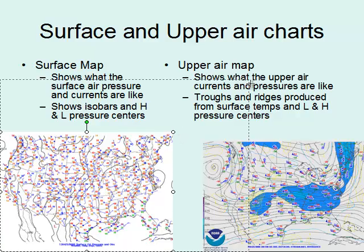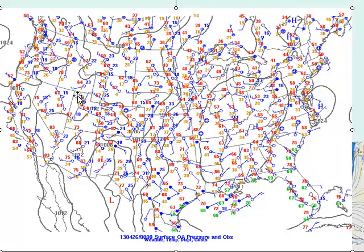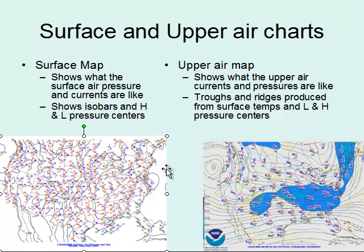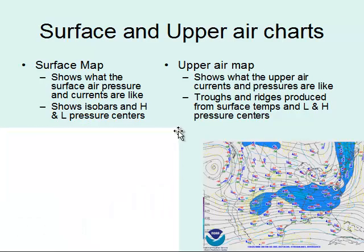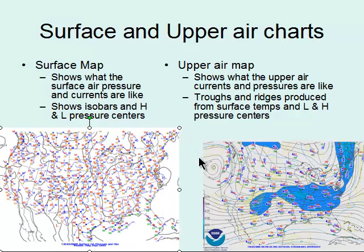If we enlarge this diagram, you can see lots of information. The black lines are pressure lines, and here you can see a closed black line with an H in the center. Each of these lines has a number on them. These other features are called station models, which we'll talk about in the next few slides. We measure the air pressure at each location, construct these pressure lines, and find out where the highs and lows are located.